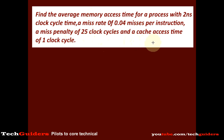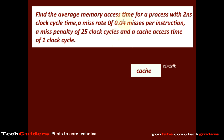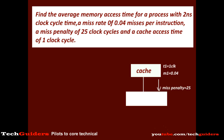We have a cache whose access time T1 is 1 clock cycle, the miss rate M1 is 0.04, and the miss penalty to the lower layer is 25 clock cycles.